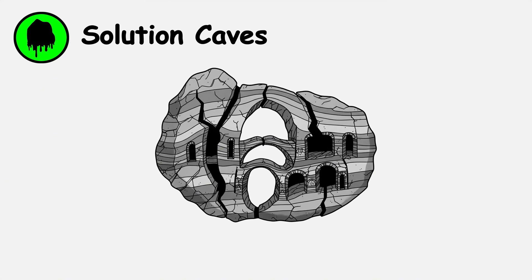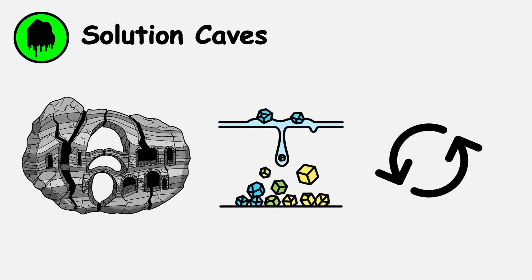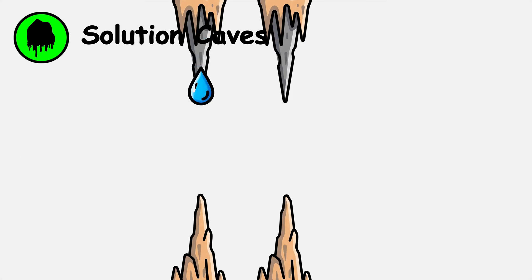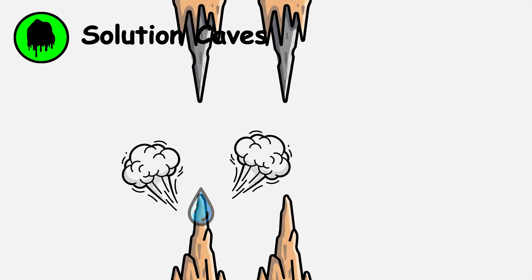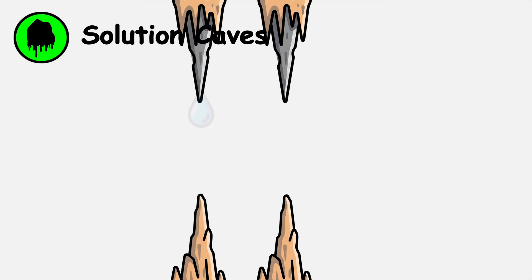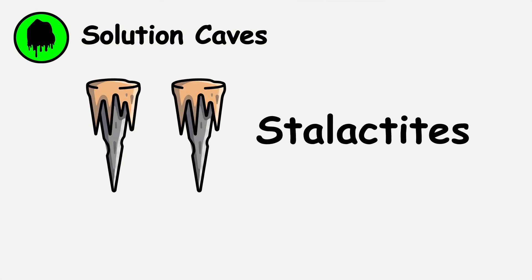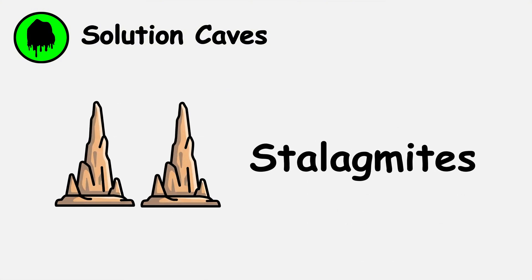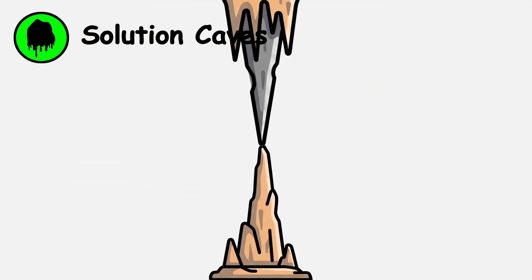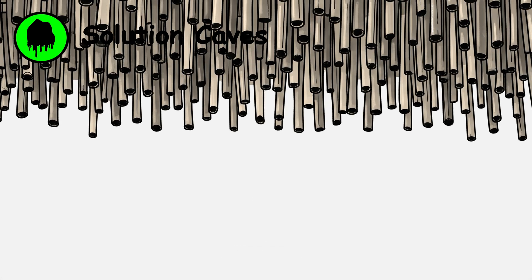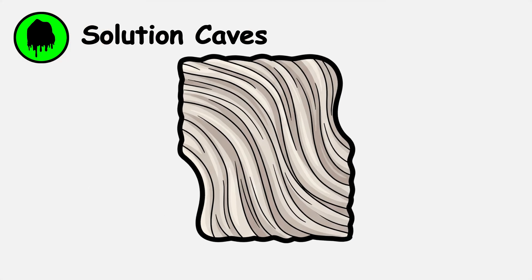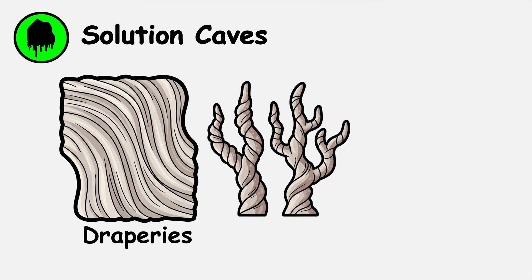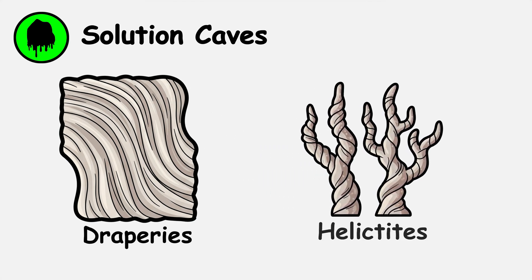The distinctive formations result from the same chemistry in reverse. As mineral-laden water drips, carbon dioxide escapes, causing calcite to precipitate. Stalactites grow downward from the ceiling, while stalagmites build upward from the floor, sometimes meeting to form columns. Other formations include delicate soda straws, flowing draperies, and bizarre helictites that grow in all directions.